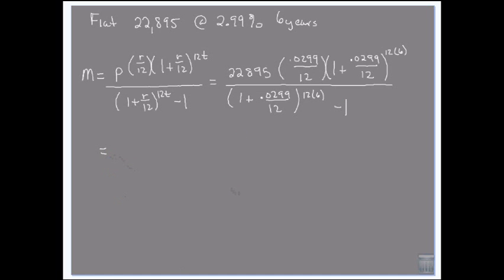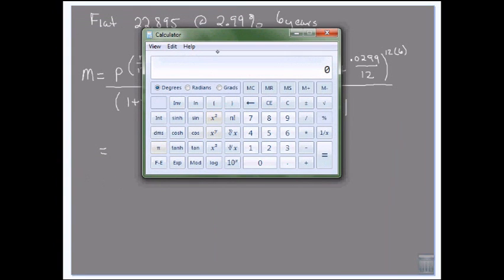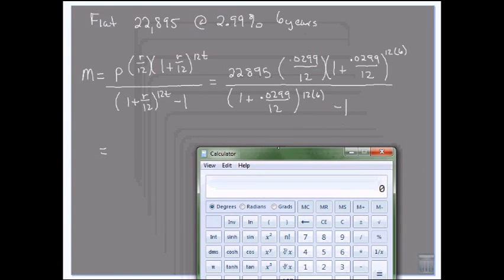So I'm going to pull up the scientific calculator so you can see the keystrokes that I make. So the first thing I want to do is do the 12 times 6. If you didn't already know it, it's 72.